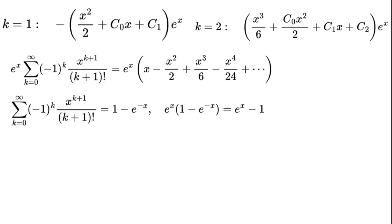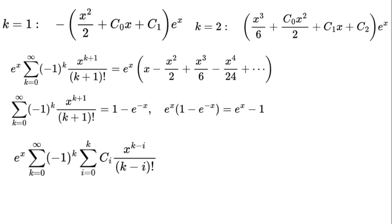For the constants: e to the power of x times the sum from k equals 0 to infinity of negative 1 to the power of k times the sum from i equals 0 to k of cᵢ times x to the power of k minus i over (k minus i) factorial.